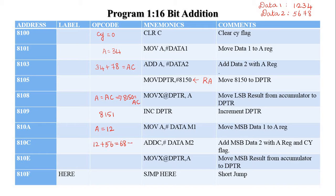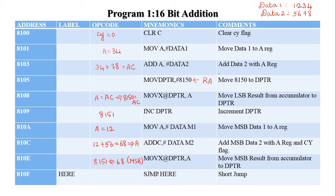The MSB answer is available in the accumulator register, and it is moved to data pointer location 8151H. Finally, the result is stored at two memory locations: 8150H contains the LSB answer (ACH) and 8151H contains the MSB answer (68H). The last instruction is a short jump, which is used to stop the program since the 8051 has no HALT instruction.